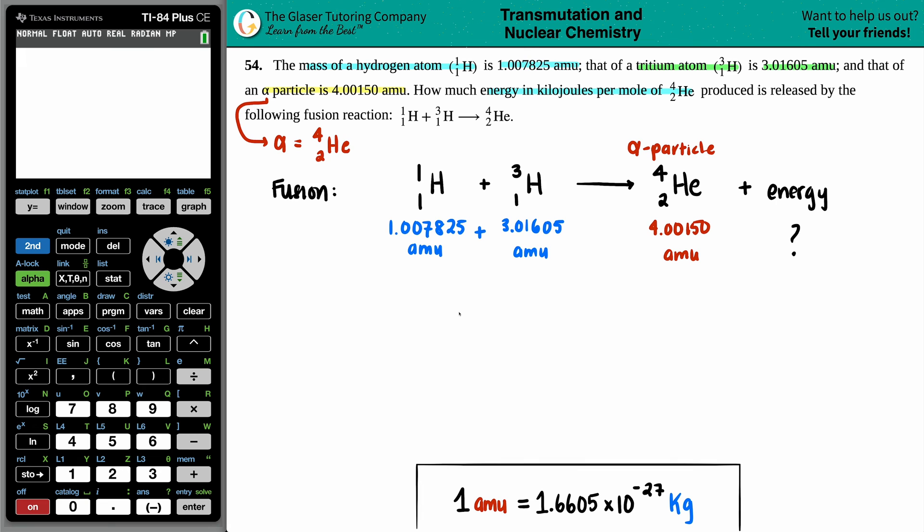And always with fusion, your products, so the helium in this case that you're producing, is always going to be a lower value than the sum of what you started. Because where'd the rest of the mass go? It didn't just poof. It's got to account for somewhere. That's where the missing mass goes. It gets converted into energy. So that's the first thing that we should do. We should figure out what this side equals and see how much energy in mass do we have.